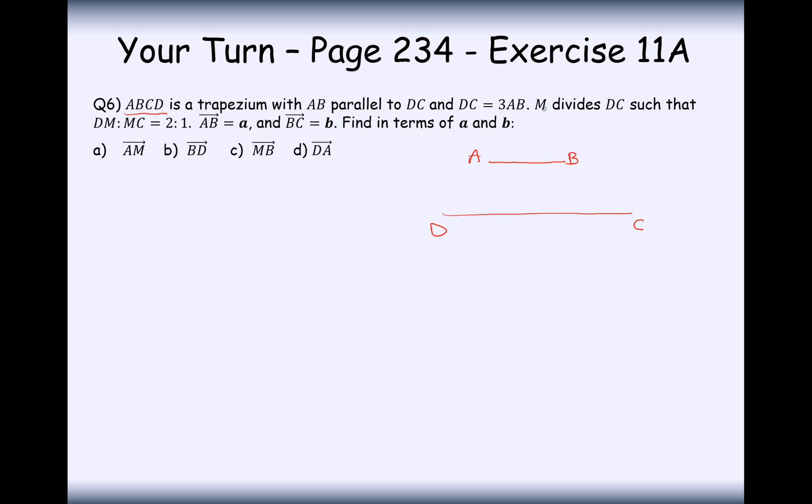M divides DC such that it's in the ratio DM to MC—not in half—so here is the ratio MC. It's two parts to one part, so effectively this is two-thirds to one-third. AB is represented with vector a, and BC is represented with vector b. Find in terms of a and b the vector from A to M.